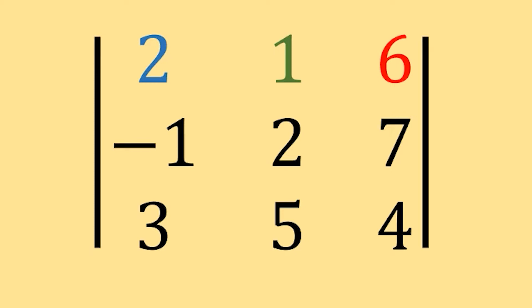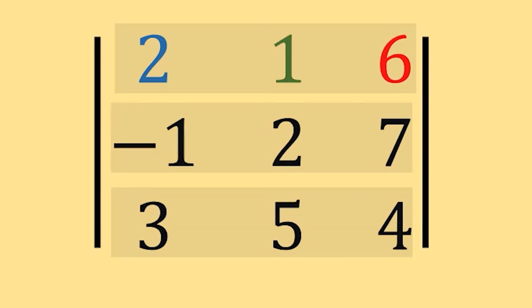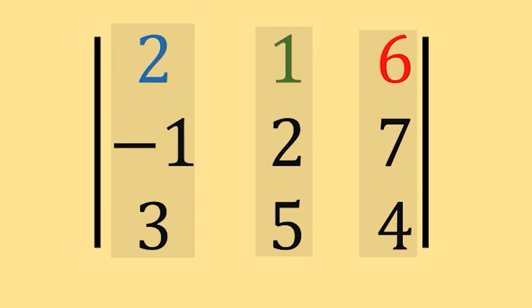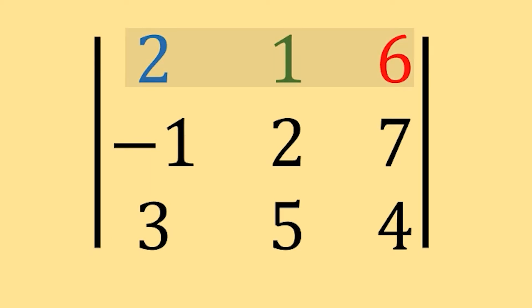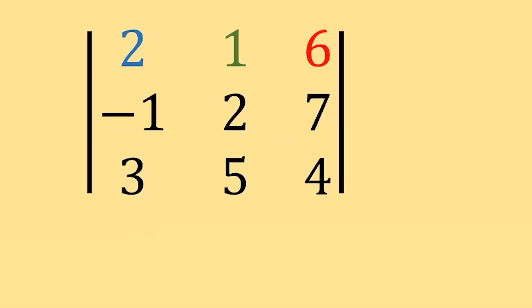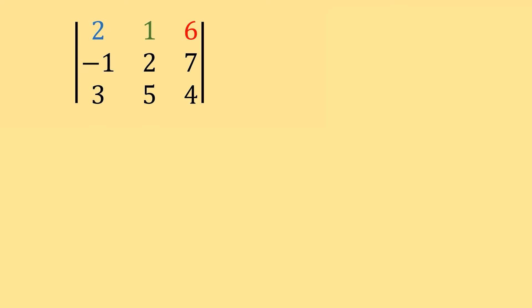Here I have a 3x3 matrix, and I'm told I have to take the determinant of it. What you do when you're taking the determinant is you first select a row or a column that you're going to use to calculate your determinant. In this example, we're going to use this top row here — that's why I have them in different colors. So I'm going to be using row 2, 1, 6 to calculate my determinant. The first thing I do is bring each one of these values down: 2, 1, and 6.